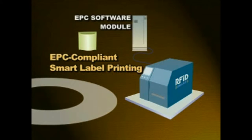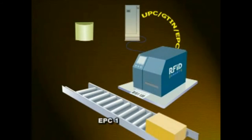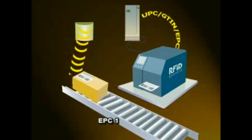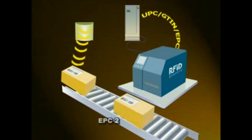To transition to an actual EPC system, an EPC software module is added to the warehouse management system. The EPC software module will generate actual EPC numbers to be encoded in the smart label.